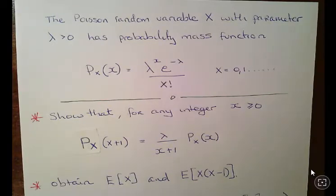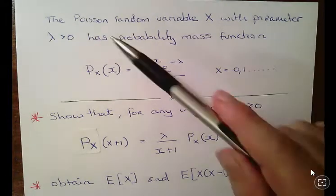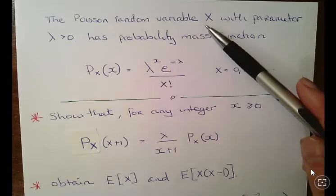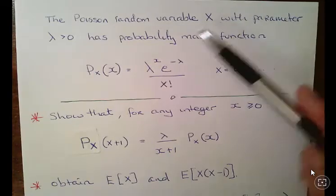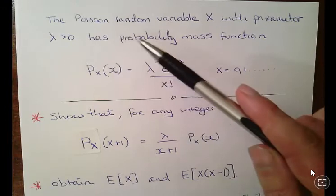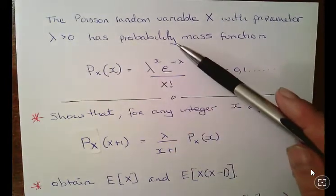In this presentation we're going to look at the Poisson random variable X with a parameter lambda greater than or equal to zero. That's the Poisson rate parameter, or Poisson mean.